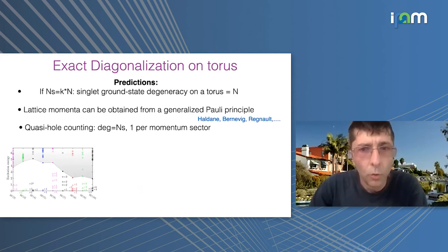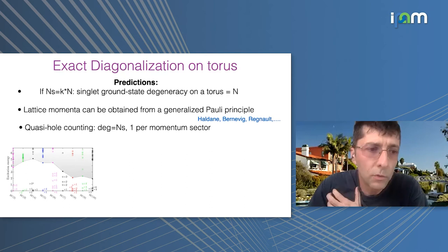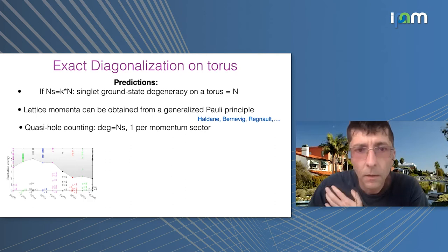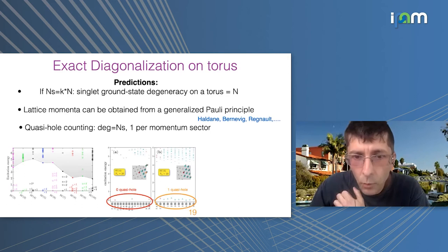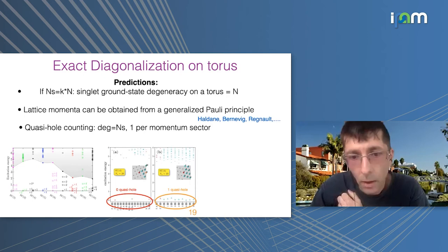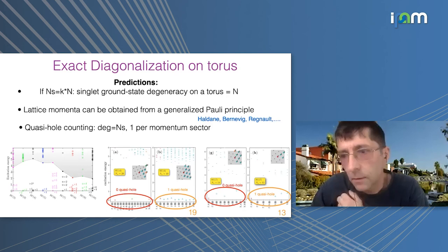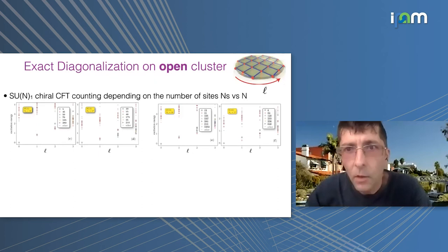Not only can you look at the singlet physics, but you can also do the quasihole sector, which is very interesting. You simply change the size of your cluster: now you have a quasihole in the system, and the degeneracy is much larger — equal to the number of sites, much larger than N. The counting gives one state per momentum sector; here for SU(4) on a 19-site cluster on the torus you have a huge degeneracy, and the quasi-degeneracy is very good. Similarly for SU(7) on 13 sites, etc.